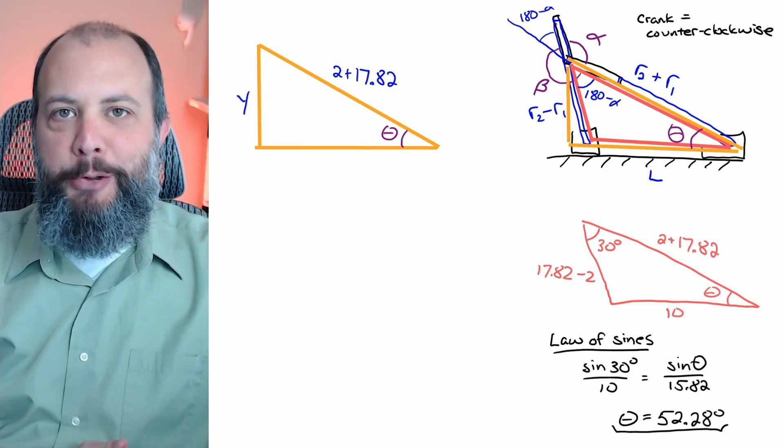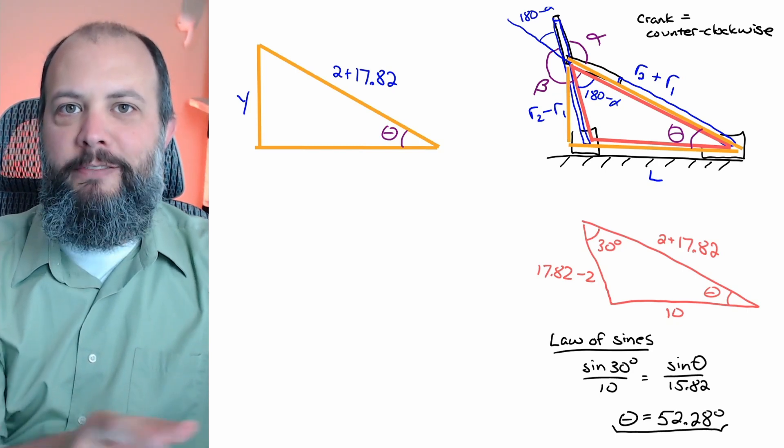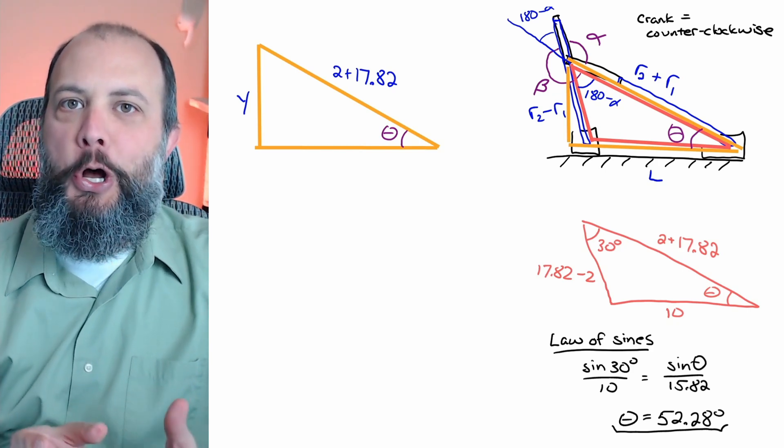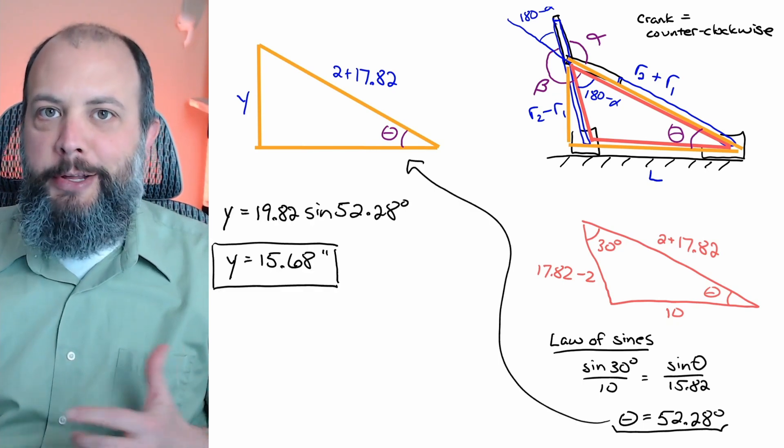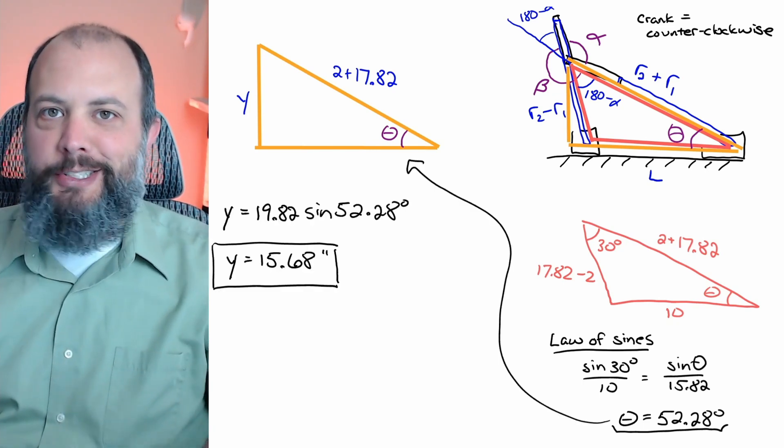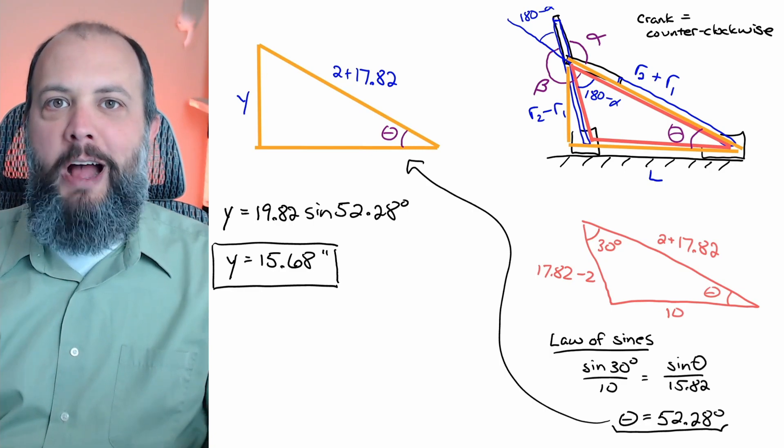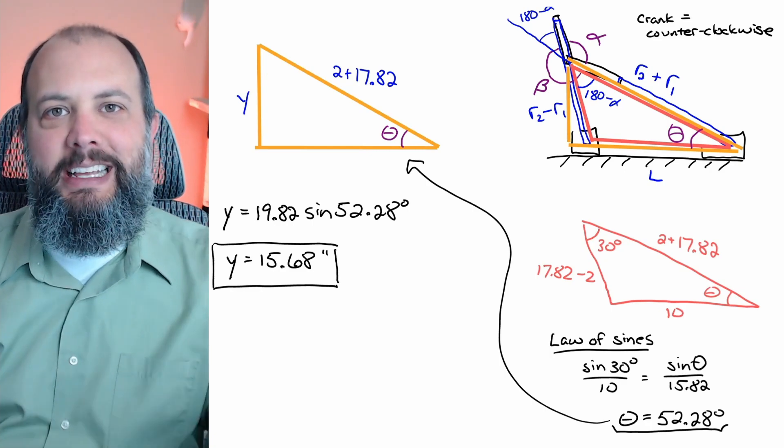Using the original triangle that I used to find the coupler length I can find that angle theta using a law of sines. And then now since this new orange triangle is a regular right triangle, just a single sine value and you get a y value of about 15.7 inches.